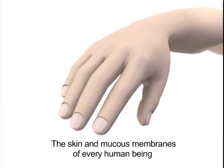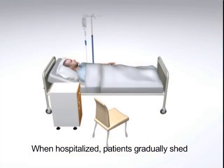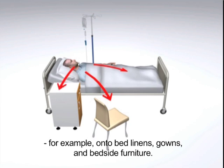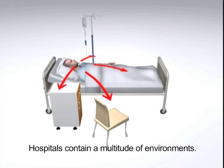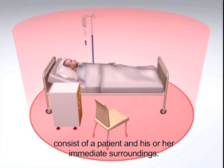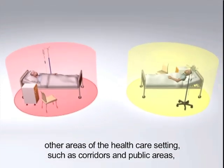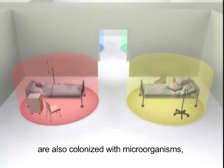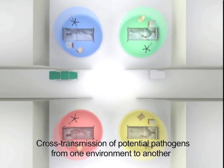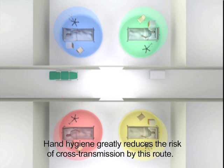The skin and mucous membranes of every human being are colonized by various microbial species. When hospitalized, patients gradually shed these microorganisms onto inanimate objects in their immediate surroundings — for example, onto bed linens, gowns, and bedside furniture. Hospitals contain a multitude of environments. Some of these, dubbed patient zones, consist of a patient and his or her immediate surroundings. As a result of contamination by both healthcare workers and patients, other areas of the healthcare setting, such as corridors and public areas, are also colonized with microorganisms, though to a lesser extent than patient rooms. Cross-transmission of potential pathogens from one environment to another occurs through healthcare workers' hands. Hand hygiene greatly reduces the risk of cross-transmission by this route.